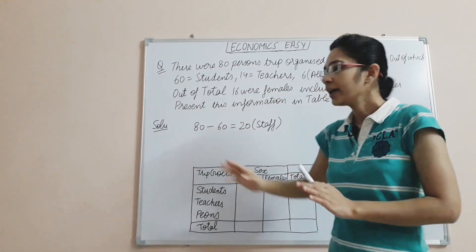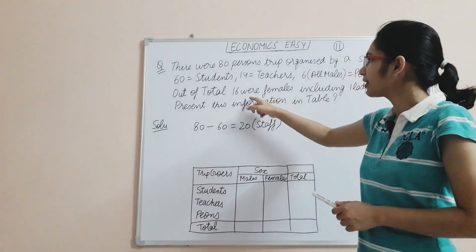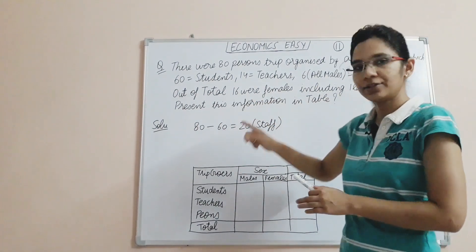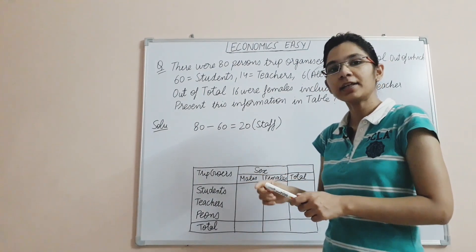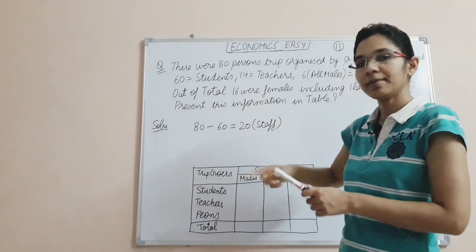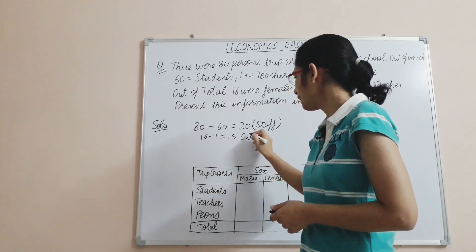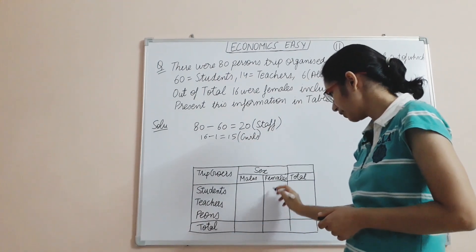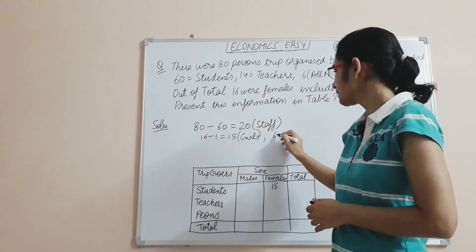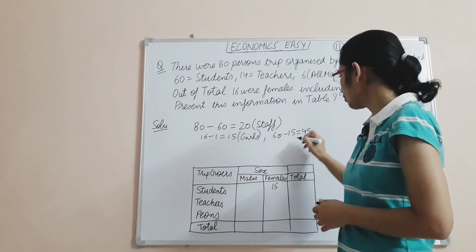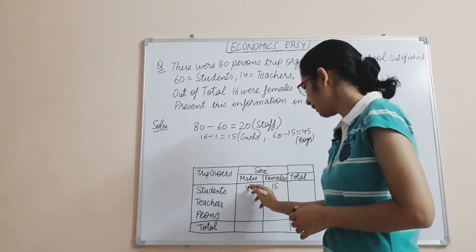Out of 80 total persons, 60 are students, so 20 are staff (80 minus 60). Out of 16 females, one is a lady teacher, so the remaining 15 are girls. So female students = 15 girls. Out of 60 students, 15 are girls, so boys = 60 minus 15 = 45 boys.